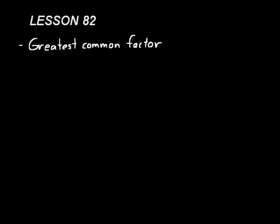Lesson 82 starts on page 431 and it's about finding the greatest common factor. Let's think about what we're doing here. A factor is a number that you use in multiplication. Like if you did 6 times 4 equals 24, the 6 and the 4 are factors in that multiplication problem. 24 is the product.